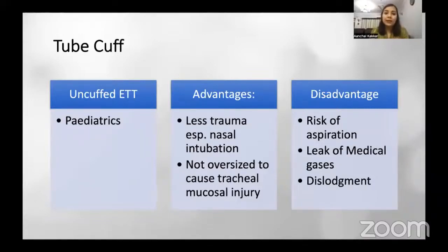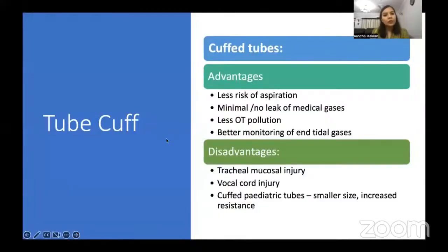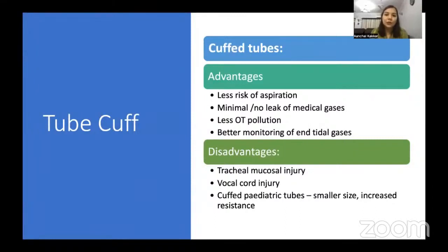Further disadvantages of uncuffed tubes include: medical gas leakage, high chance of dislodgement with pack removal or sudden neck hyperextension, and high chances of OT pollution due to gas leaks. The advantages of cuffed tubes include: less chance of aspiration, minimal or no medical gas leak, minimal OT pollution, better monitoring of the endotracheal tube, and less chance of dislodgement or accidental extubation.